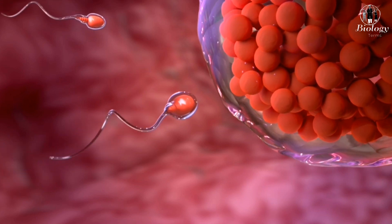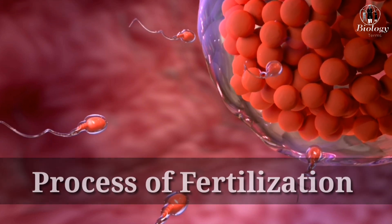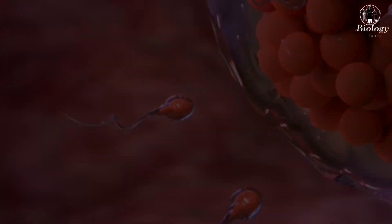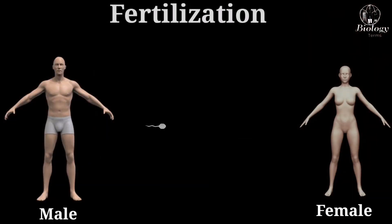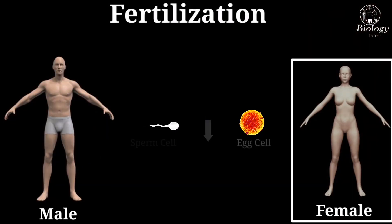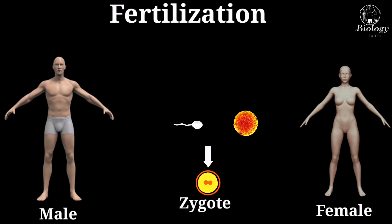Hello and welcome to our video on the process of fertilization. Fertilization is the process by which a sperm cell from a male and an egg cell from a female combine to form a zygote, which is the first stage of a new individual.